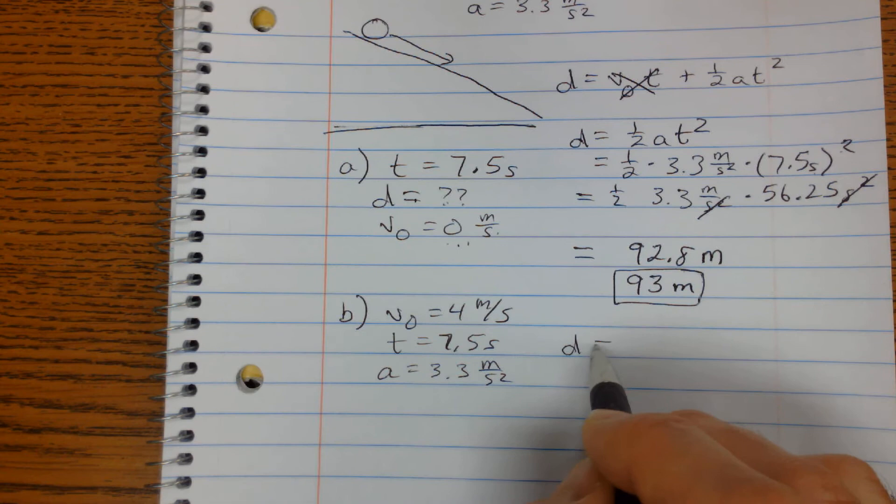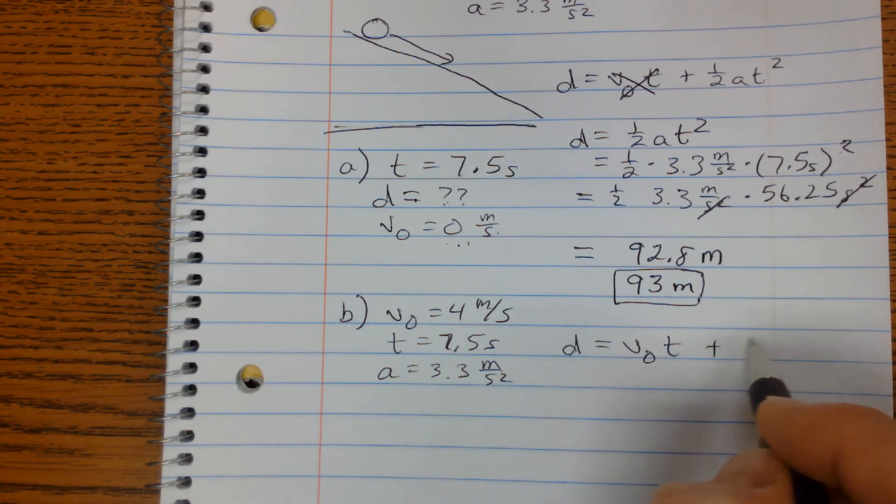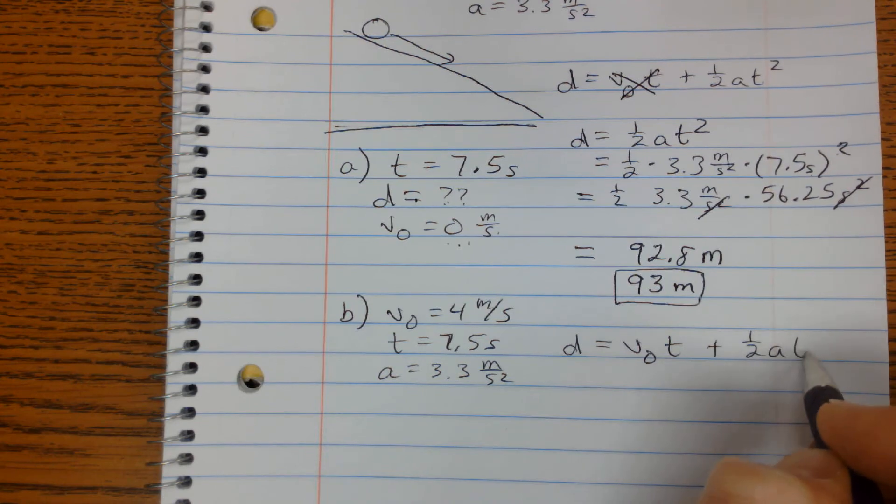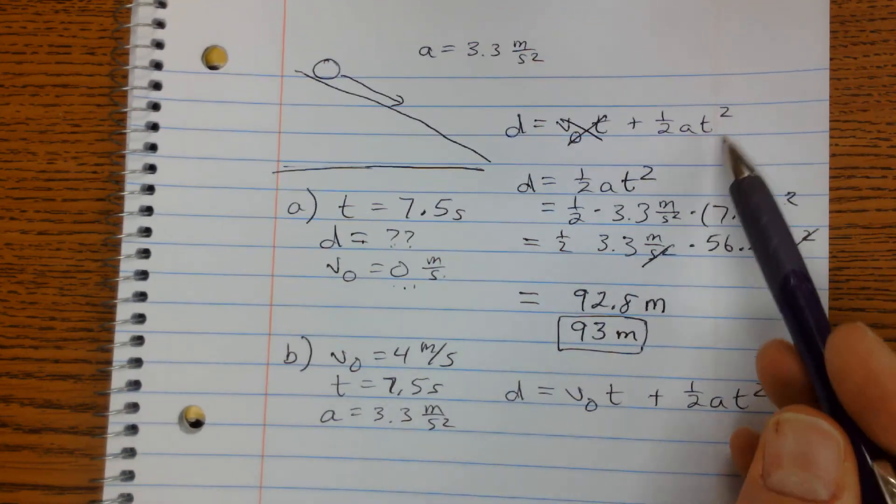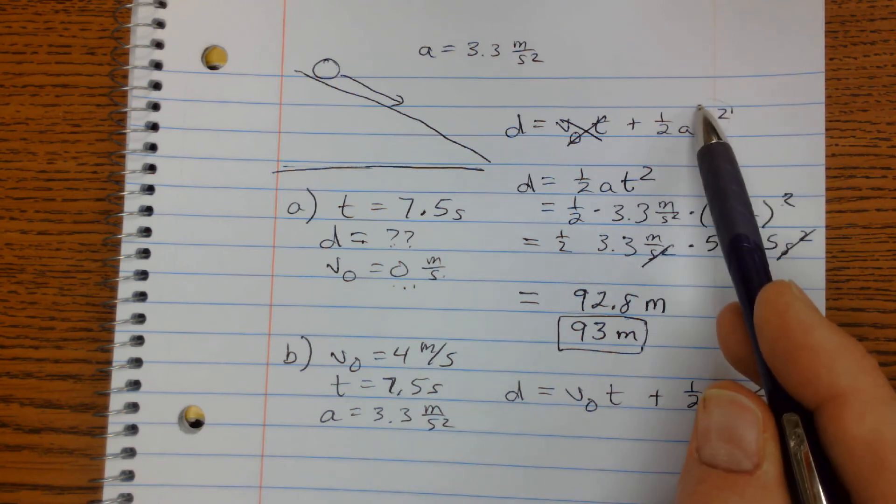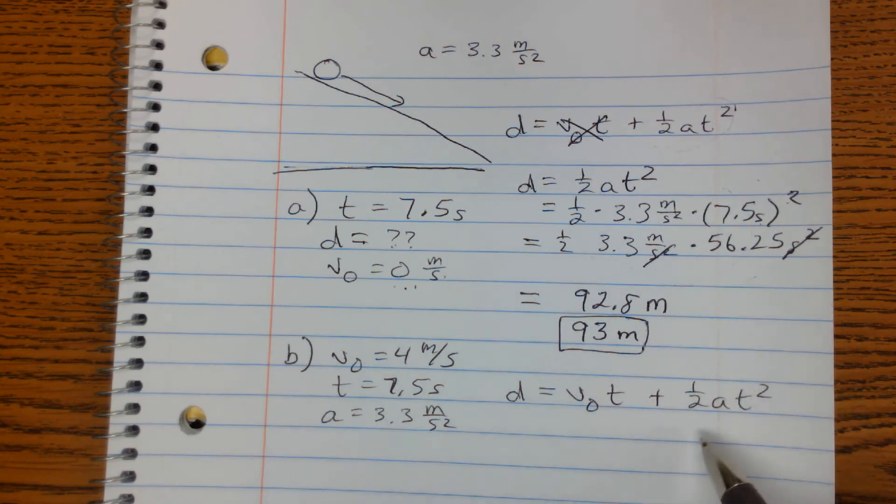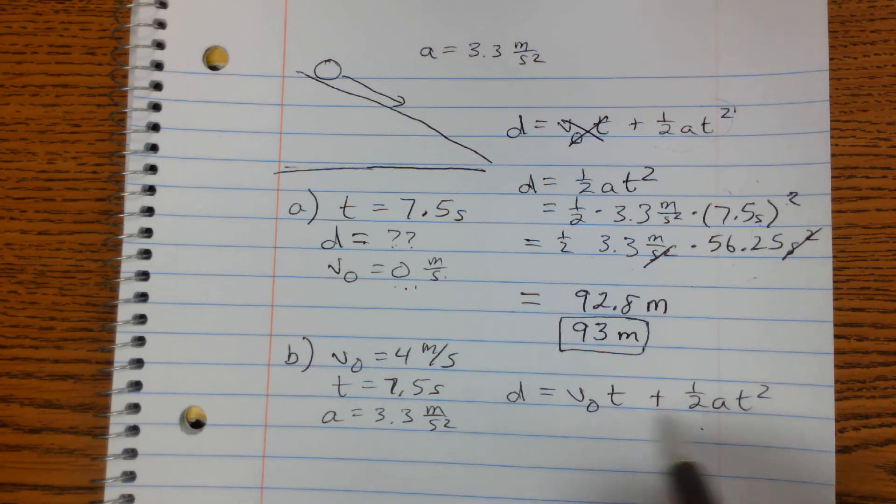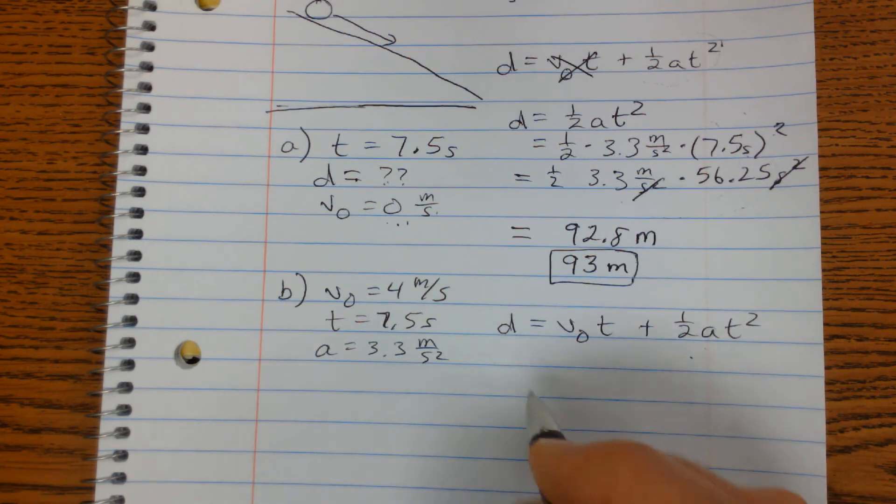So let's go ahead and put in distance is equal to the initial velocity times the time plus ½ at squared. Now, if you'll notice, nothing changed on this term. All of this work that we already did is going to be the same down here. So when I go to do this, I'm going to shortcut this, and I'm just going to put in my 92.8 meters.